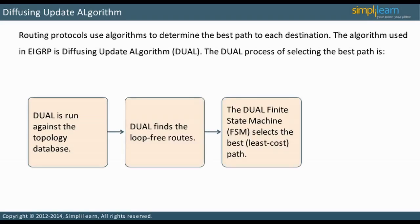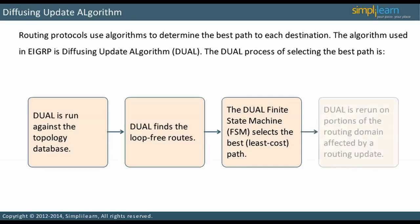The DUAL finite state machine, FSM, selects the best, least cost path to insert into the routing table. After routers boot and initialize, EIGRP DUAL is rerun only against those portions of the routing domain that are affected by a routing update. That is why it is said EIGRP updates are bounded.